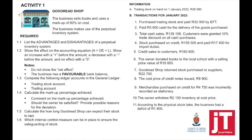Question 1.2: show the effect it will have on the accounting equation. Note: do not show the net effect, and the business has a favorable bank balance — that is very important to get right. Question 1.3: complete the following ledger accounts in the general ledger — specifically the trading stock account and the trading account. Question 1.4: calculate the markup percentage achieved. Question 1.5: calculate how long Goodread Shop can expect their stock to last. Question 1.6: which internal control measures can be in place to ensure the safeguarding of stock? These are commonly asked questions when we look at inventory systems.